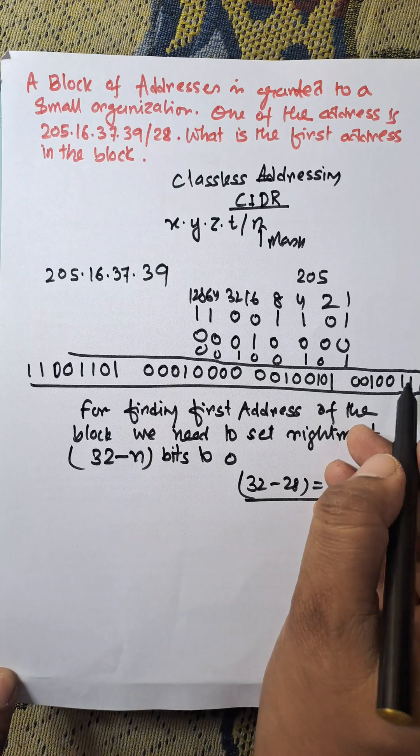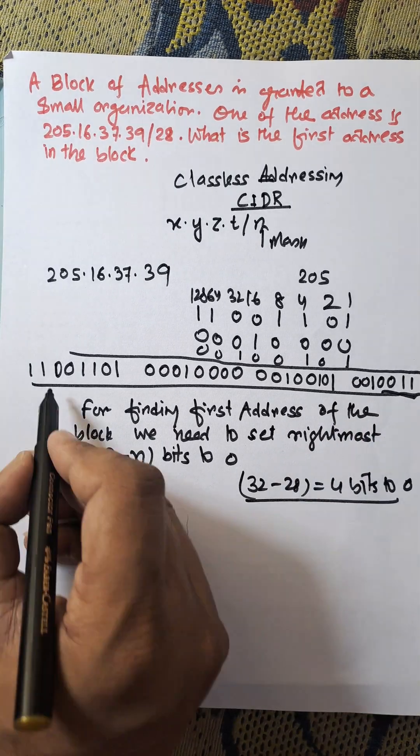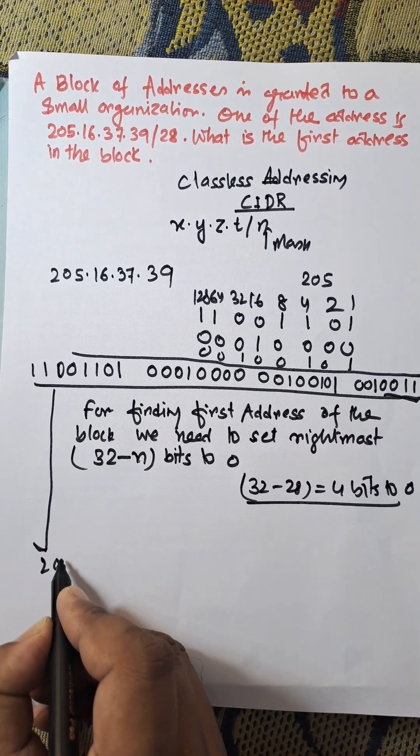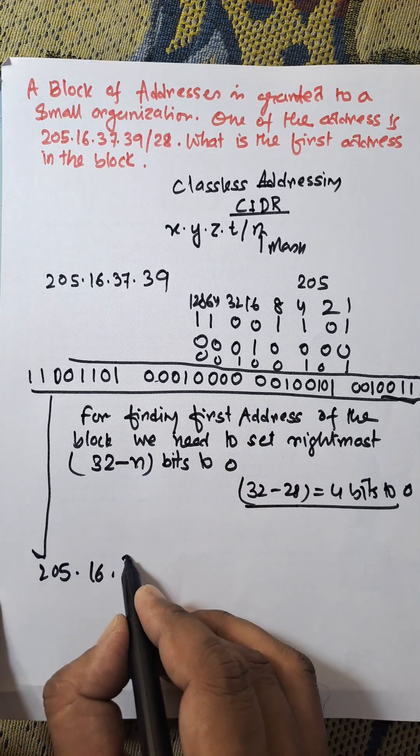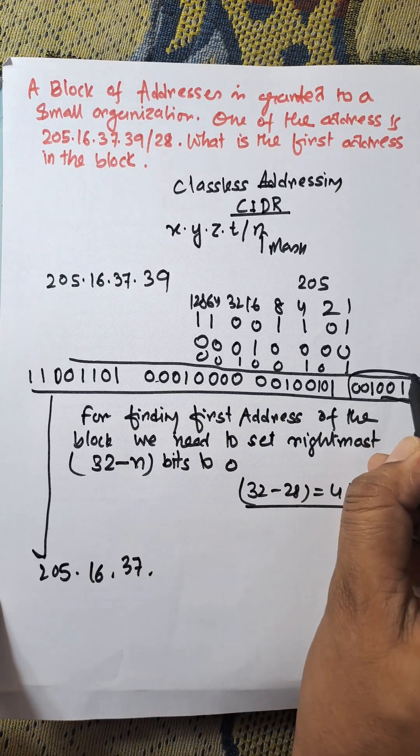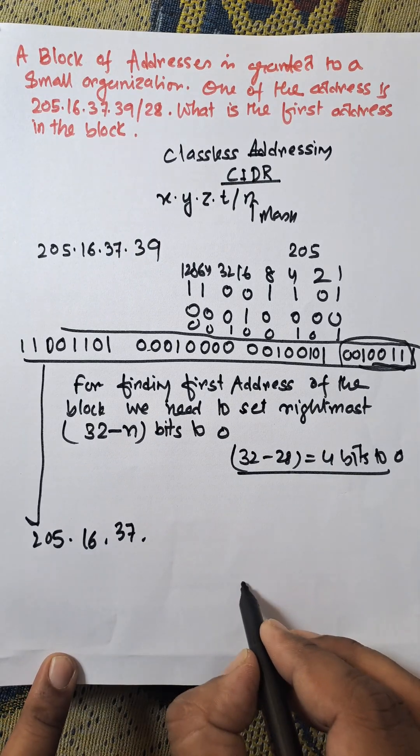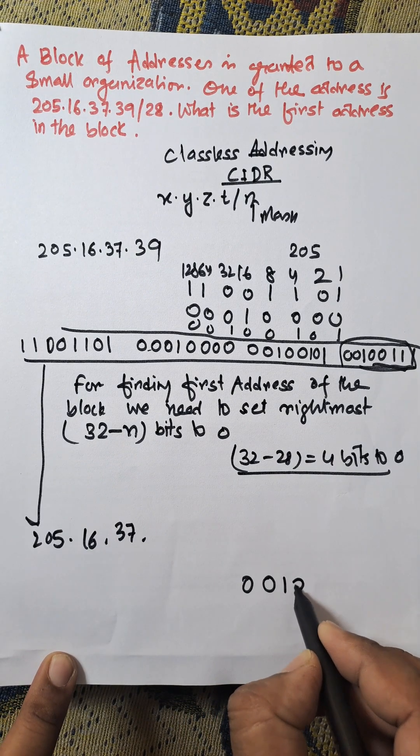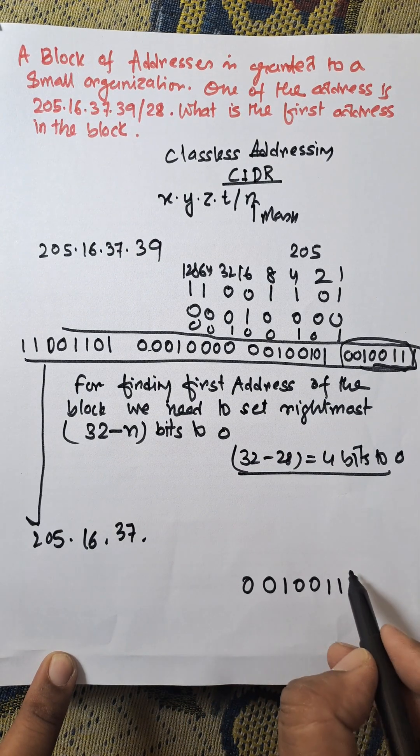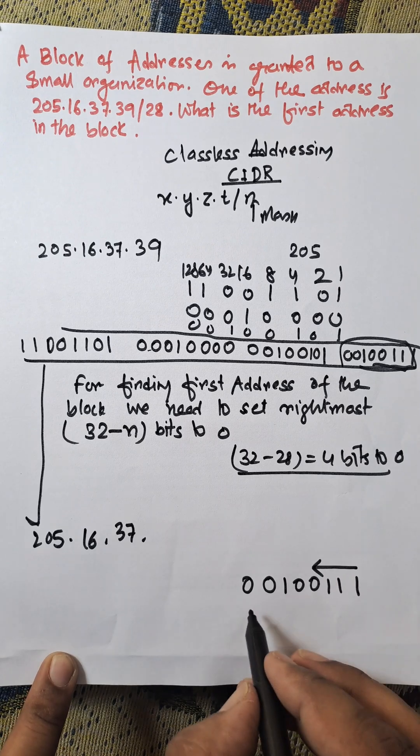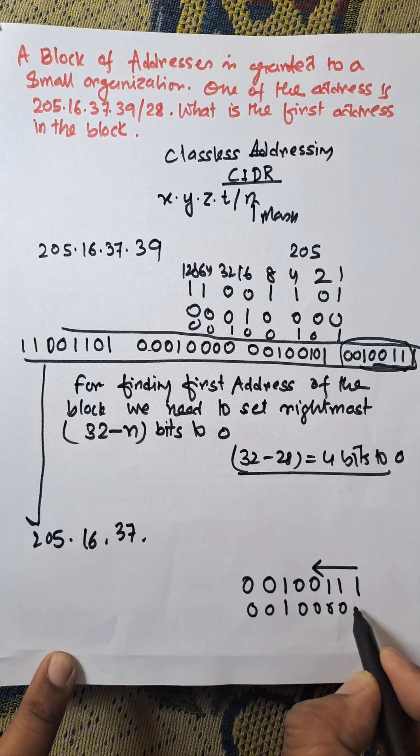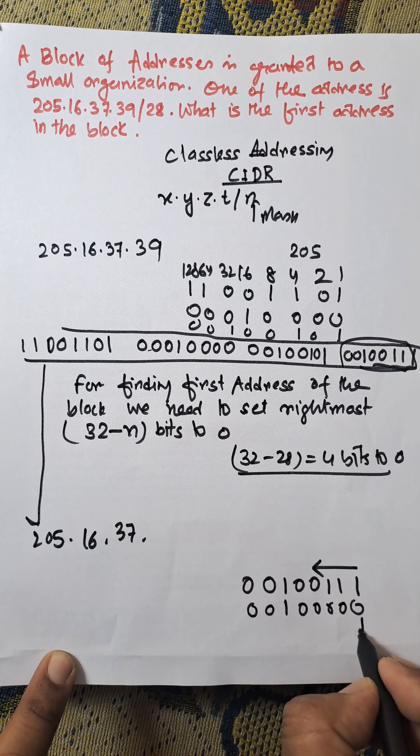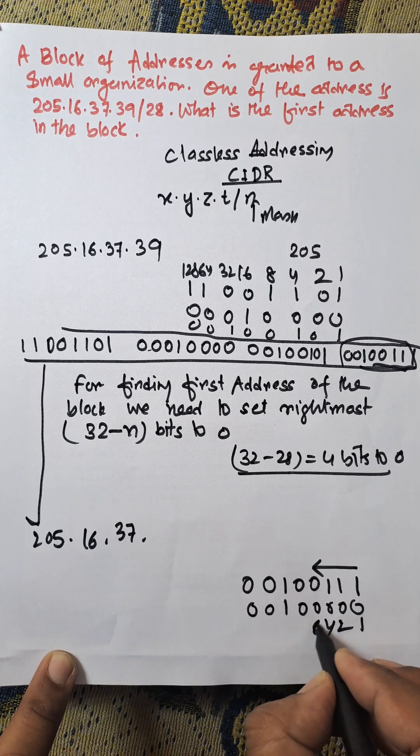So rightmost position, that will remain same: 205, remain 16 same, remain 37 same. And this one needs to be changed, that is 00100111. Last 4 bits set to 0, that is 00100000.